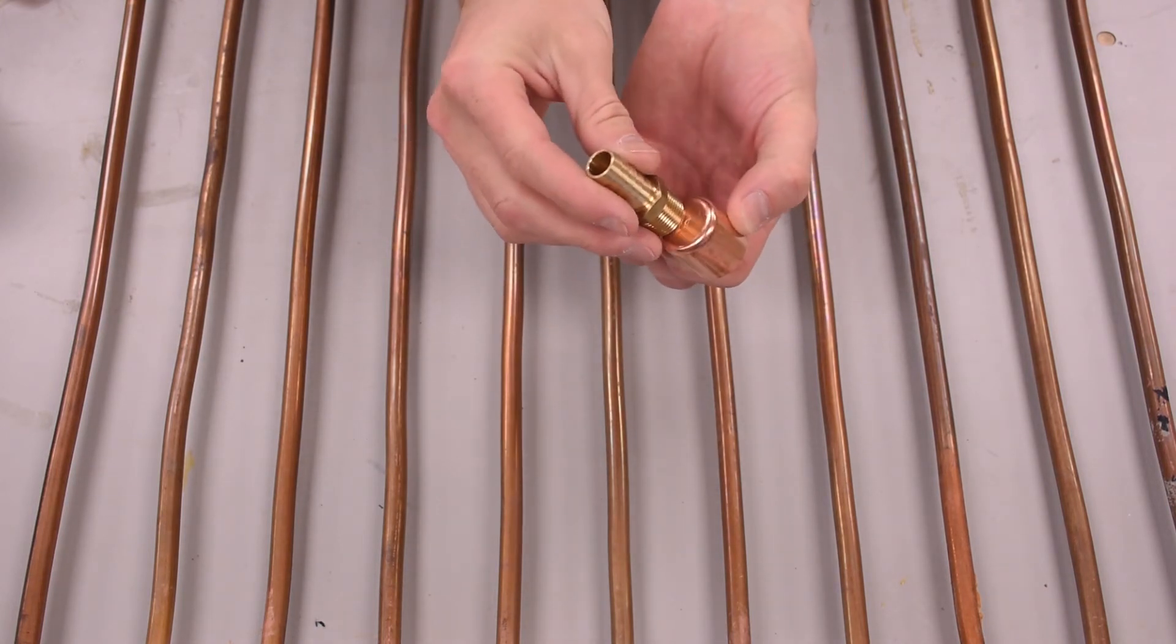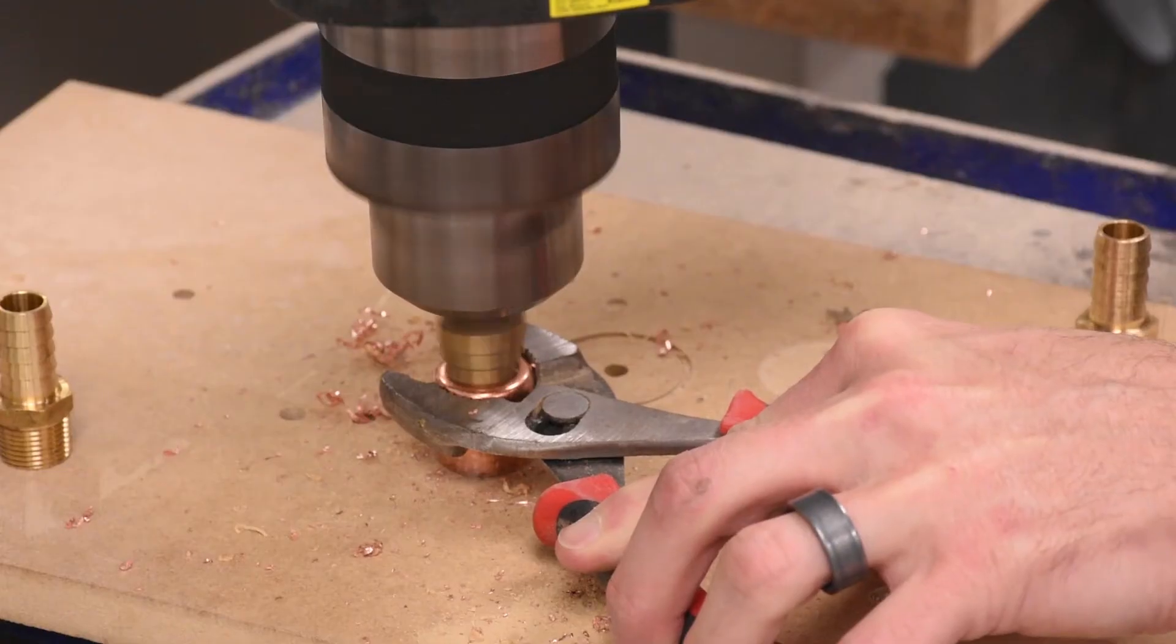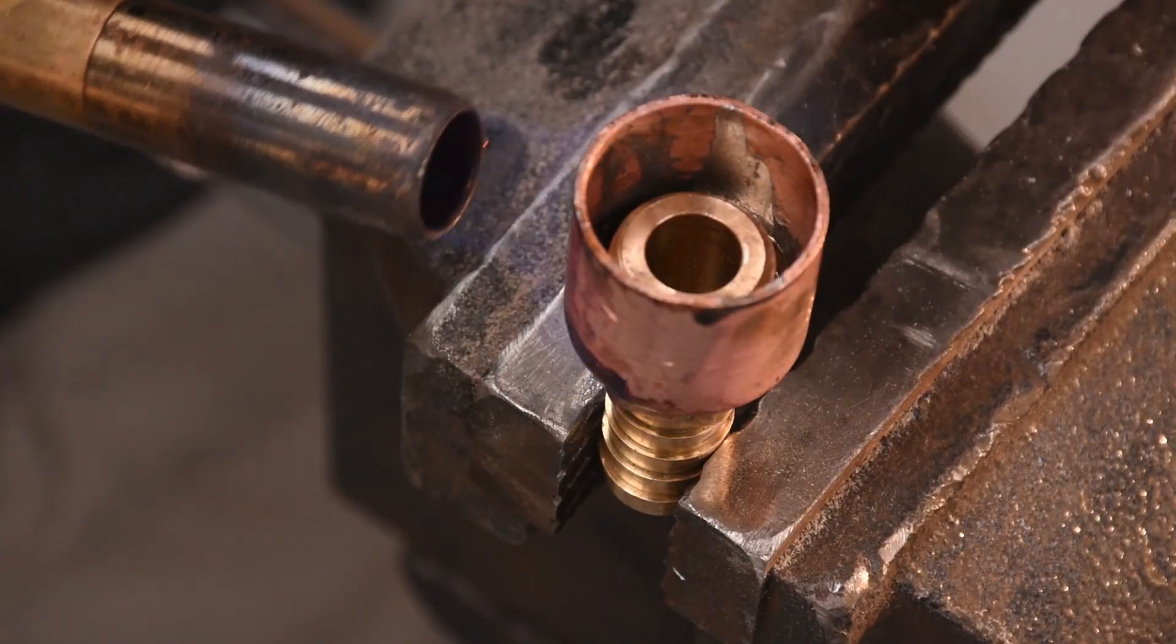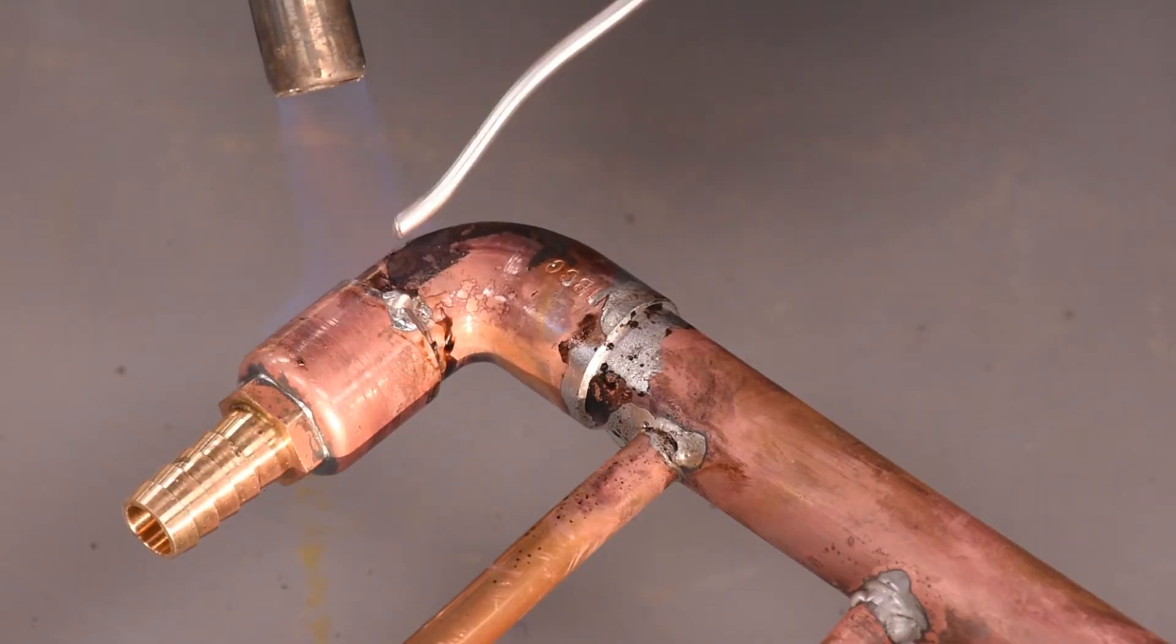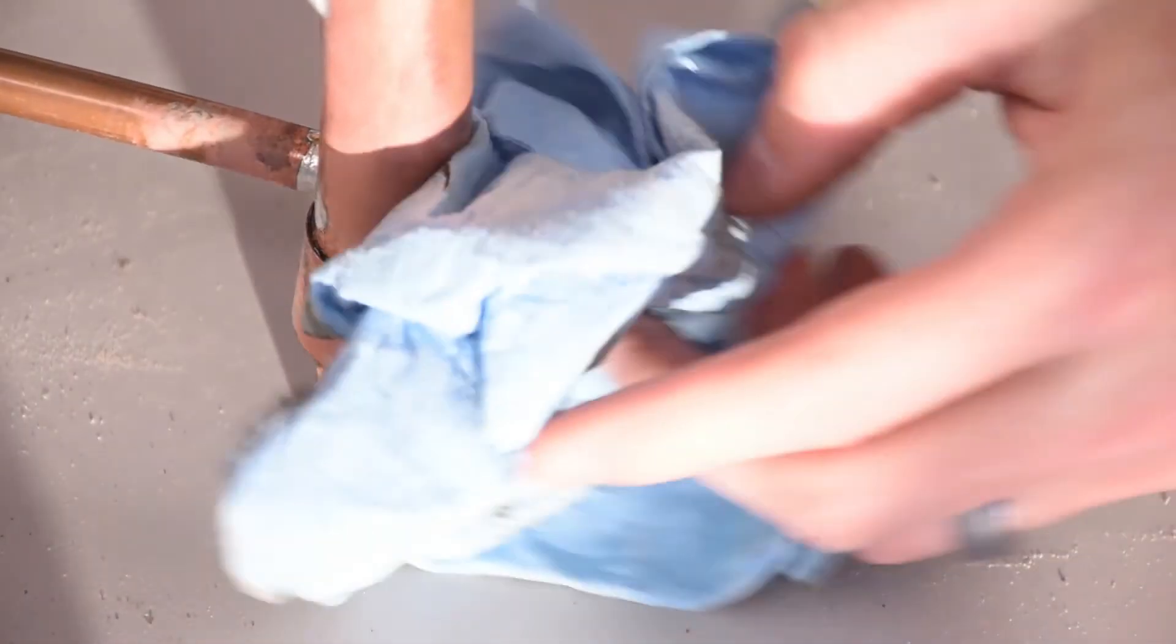And there was no cheap and easy way to do this, so I made my own fitting by drilling a copper cap and then soldering a half inch brass hose fitting to it. Last was soldering up the inlet and outlet fittings and giving them a good wipe.